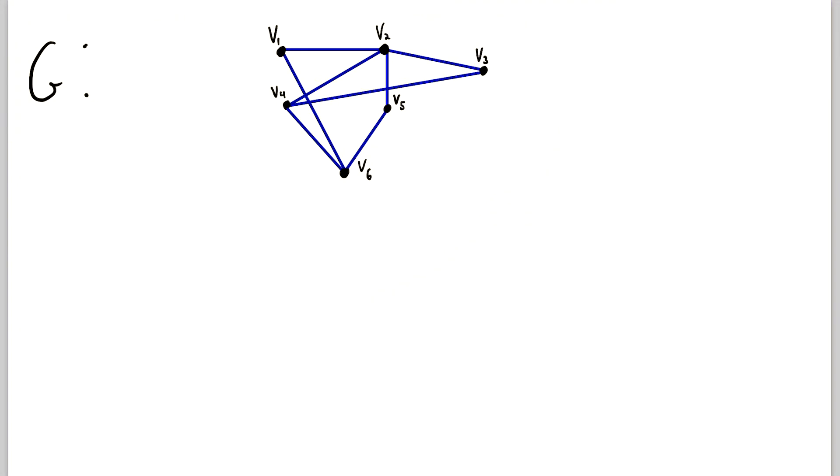Just as before, let's say we are intrepid travelers making our way through this graph. Suppose we start at this vertex V1, and then let's say we make our way over here to V2, and then we head on down to V5, and then we go over here to V6, then we cross this edge up to V4, then we go back to V2, and then make our way over here to V3, and then come to a stop.